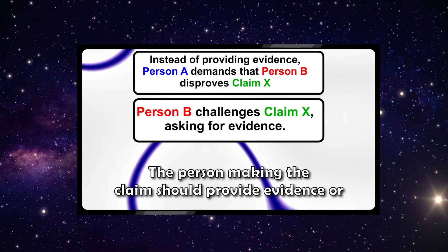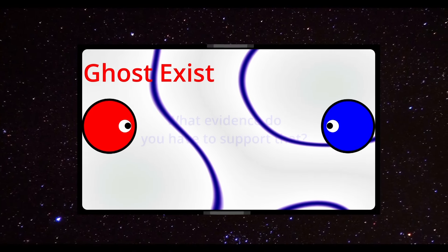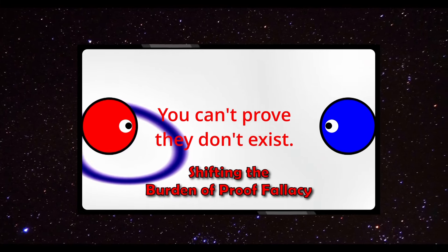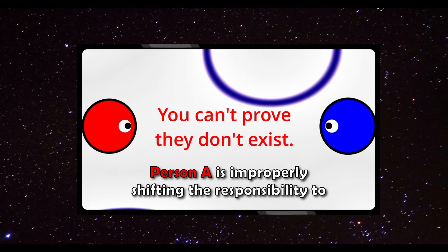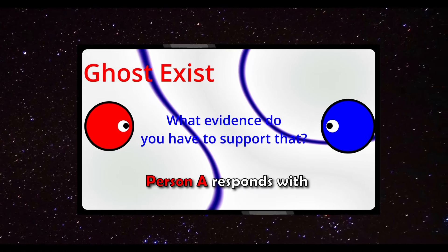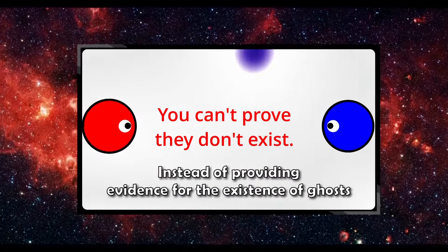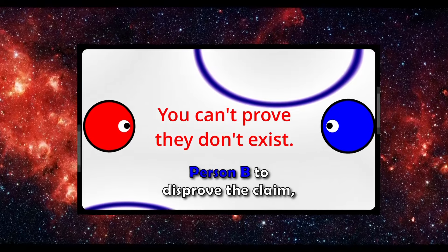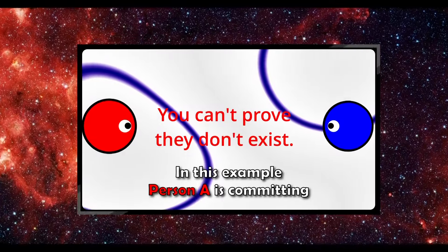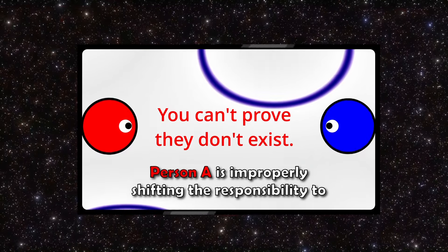This type of reasoning is fallacious because it inverts the logical responsibility — the person making the claim should provide evidence or reasoning, not the one questioning it. Let's examine this example: Person A asserts, 'Ghosts exist.' Person B asks, 'What evidence do you have to support this?' Person A responds with, 'You can't prove they don't exist.' In this example, person A is committing the shifting the burden of proof fallacy. That is actually a pretty good example, because it reflects what Christians believe — they somehow think there is an afterlife in which we will continue to exist as immaterial beings. So that is what ghosts are. Christians basically believe in ghosts. And if we ask them to prove that these ghosts and this afterlife thing exist, some of them indeed respond with, 'You can't prove the afterlife doesn't exist.' You could make your example even more simple — just replace ghosts with God. That would have been an even more appropriate example since you're a Christian who claims God exists.